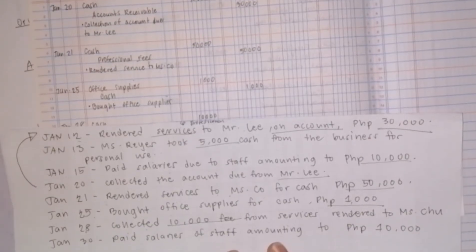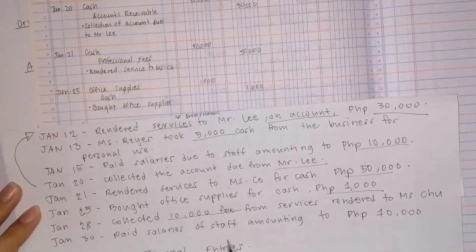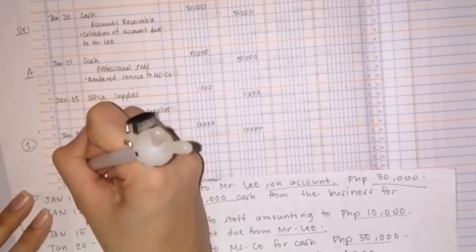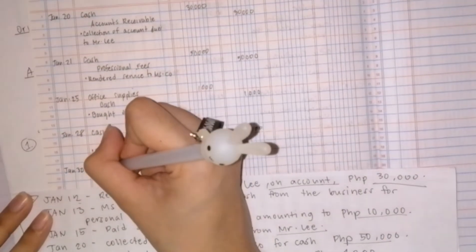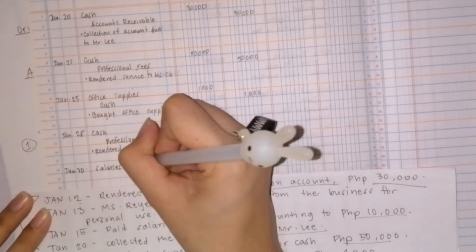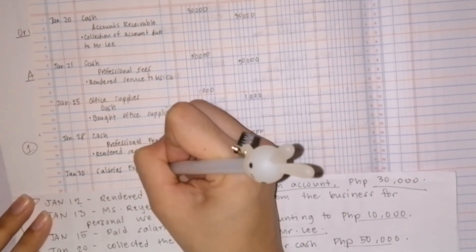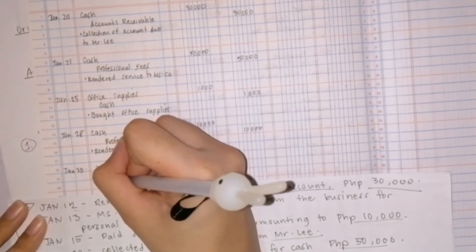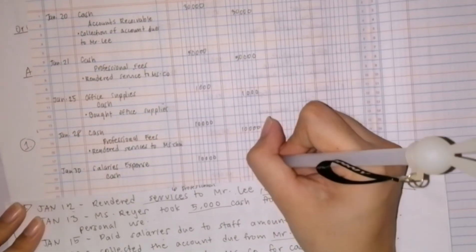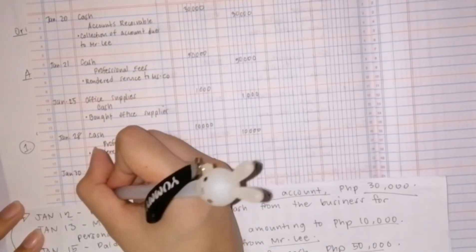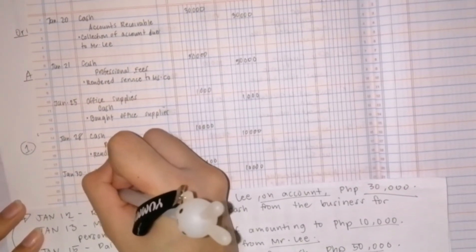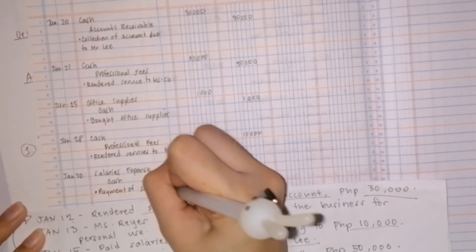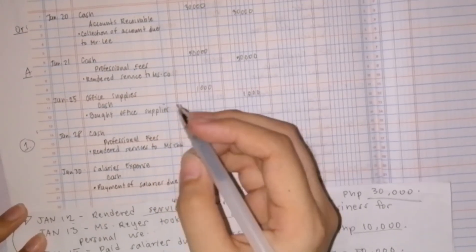The last transaction is on January 30: paid salaries to staff amounting to ten thousand. On January 30, we record a debit to salaries expense amounting to ten thousand. The counterpart is a credit to cash amounting to ten thousand since we already paid. The explanation: to record payment of salaries due to staff.